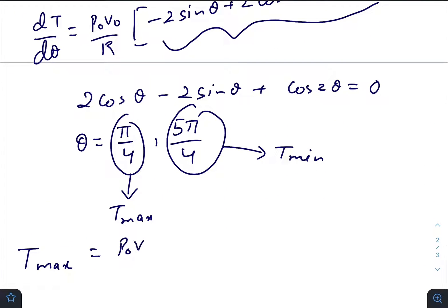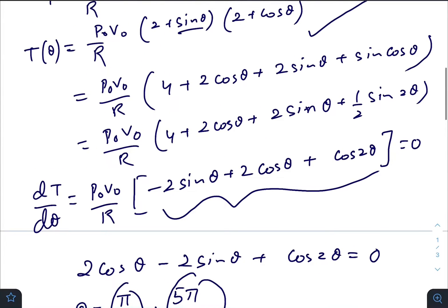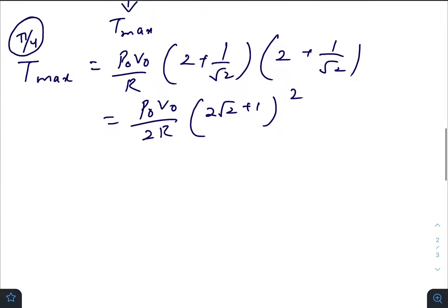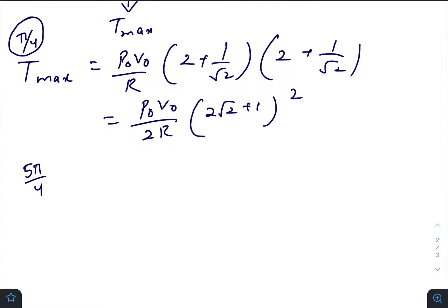p₀V₀ by R times (2 + sin θ) times (2 + cos θ). So sine for π by 4, temperature is maximum, so that would give you p₀V₀ by 2R times (√2 + 1)². And for 5π by 4 you would get T_min.